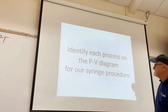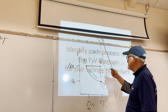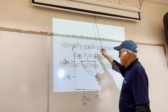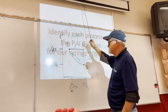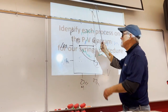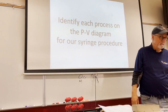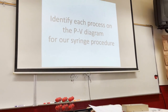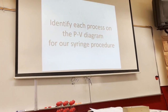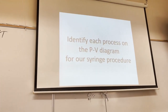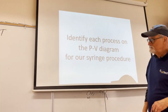For our syringe PV diagram, we identify each process — and we do not have an adiabatic process in this cycle. The processes we identified follow along one iso-type each, not between isotherms.